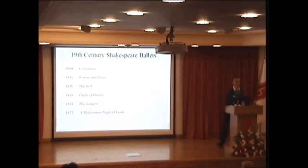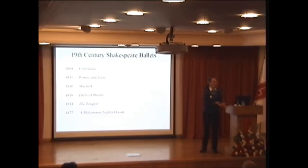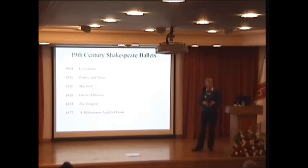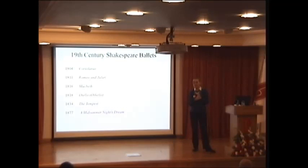The 19th century is a specific century in world theatre history, because in theatrical productions various changes are taking place. Spectacle, although always very important, gains a lot of importance, and we see a variety of productions. We also see ballet versions of various Shakespearean plays - for example, Coriolanus, Romeo and Juliet again, Macbeth again, Othello, The Tempest, and A Midsummer Night's Dream.